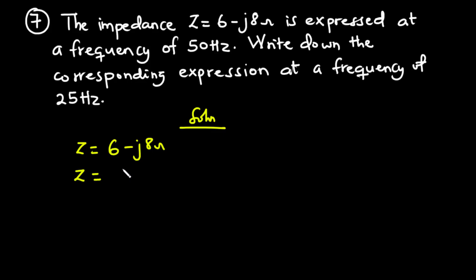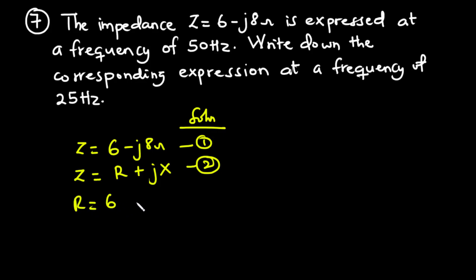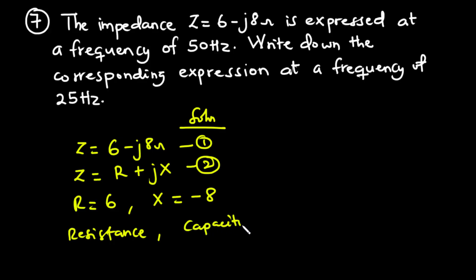For any complex number, we have the real part and the imaginary part. Comparing the two equations, we find the real part to be 6 and the imaginary part to be negative 8. The real part, which is 6, is the resistance of the circuit, and the imaginary part is the capacitive reactance. Whenever you have a negative imaginary impedance component, it is the capacitive reactance.